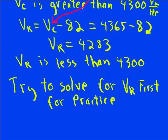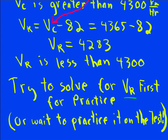What I recommend you do if you're having trouble with this is go through this problem, but see if you can solve for Vr first. I solved for Vr and eliminated it from the momentum equation and got Vc as my first unknown. See if you can do it the other way for practice, or you can wait to practice it on the test.